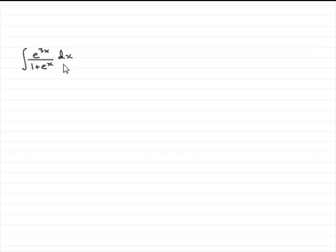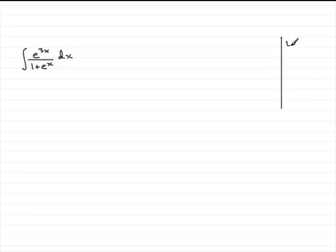The substitution they give us is to let u equal 1 plus e to the x. What I'd want to do is go over to the right here, draw a line, and put down that u equals 1 plus e to the x. So they give us that substitution.